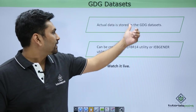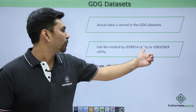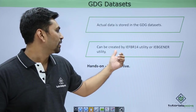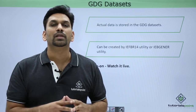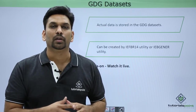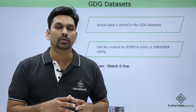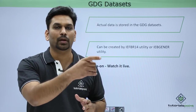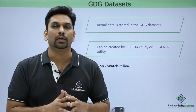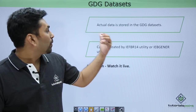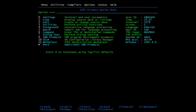GDG data sets contain the actual data and can be created by IEFBR14 utility or IEBGENER utility. When creating the next version, we append (+1) after the GDG base name - (+1) means we are creating the next version. If you want to use the current version in another JCL, put (0) after the GDG base name and it will point to the current generation.